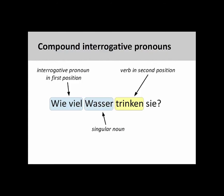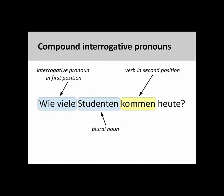The interrogative pronoun 'wie viel' (how much) is usually used in conjunction with a singular noun to ask about the quantity or volume of that noun. For example, 'Wie viel Wasser trinken Sie?' (How much water are they drinking?) The verb technically still comes in the second position, after the compound interrogative pronoun and the noun it precedes. 'Wie viele' (how many) is usually used with a plural noun. For example, 'Wie viele Studenten kommen heute?' (How many students are coming today?) Again, the verb appears in the second position.